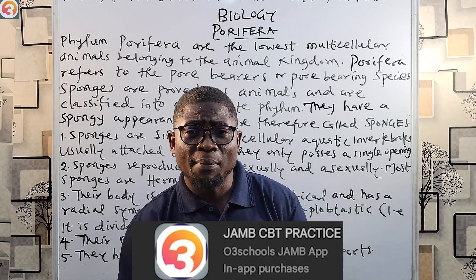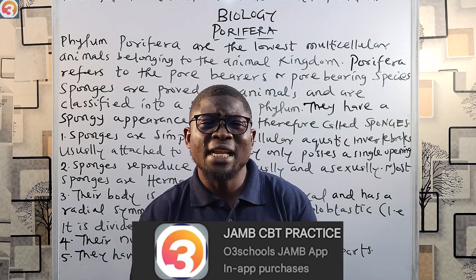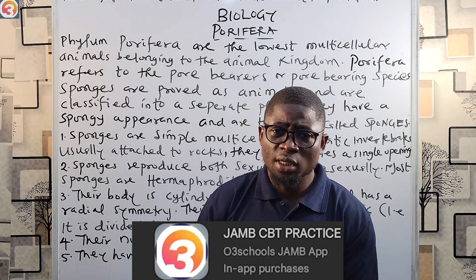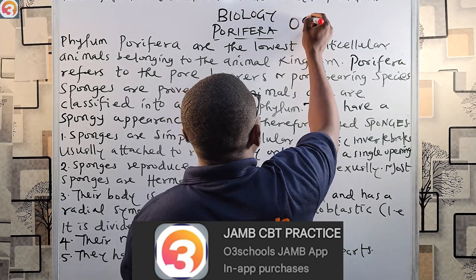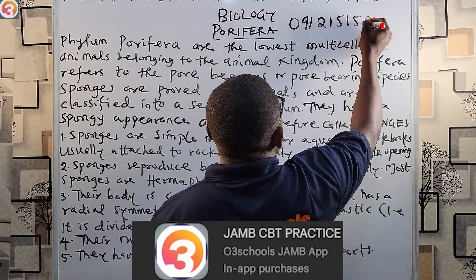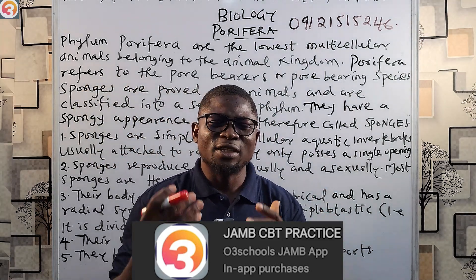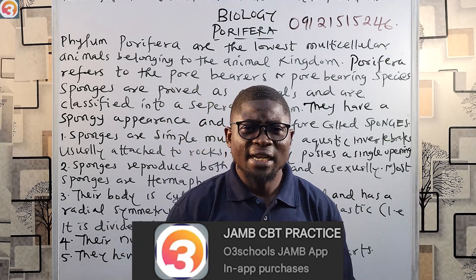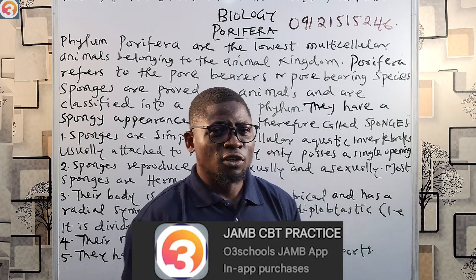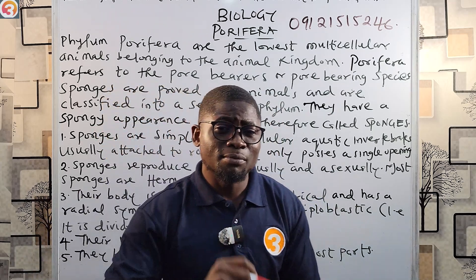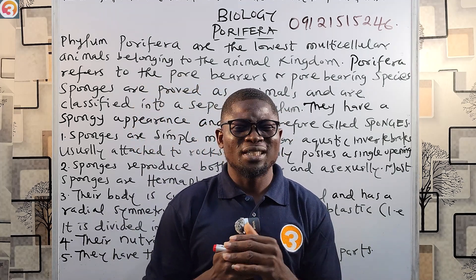You can transfer to the O3 Schools app account, or use your ATM card to pay online — that one gives automatic activation. If you're making a transfer, send the receipt to this WhatsApp number: 09121515246, and you'll get an urgent reply. Once you pay, do not panic — you will get activated. Please practice, study, and follow our tutorials episode by episode.